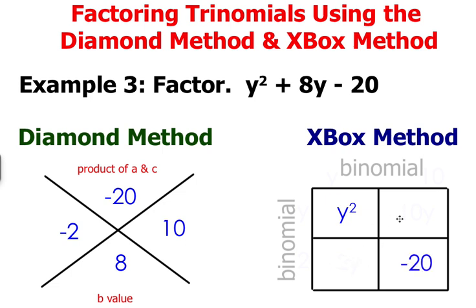And then in these remaining two boxes you're going to write your two factors. So you have a negative 2y and also 10y.